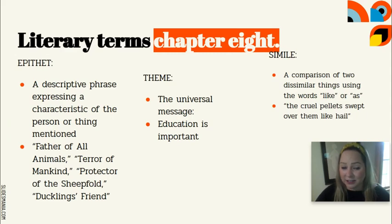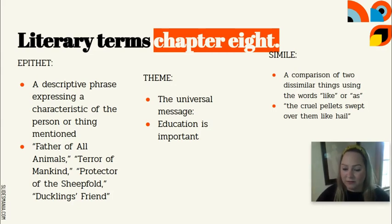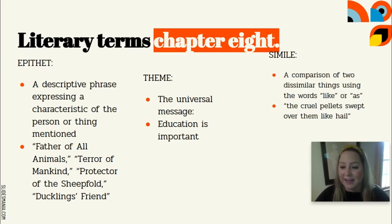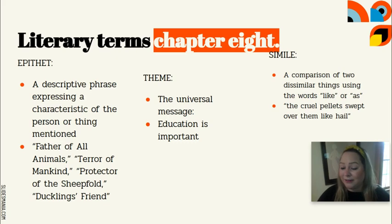For the literary terms, we're going to focus today on epithet, theme, and simile. The first one, epithet, you might recall from our unit on Greek mythology and the Odyssey or Ulysses. An epithet is a descriptive phrase expressing a characteristic of the person or thing that is mentioned. Back in our mythology unit, Athena, for example, would often be introduced as gray-eyed Athena — just a brief description of her.